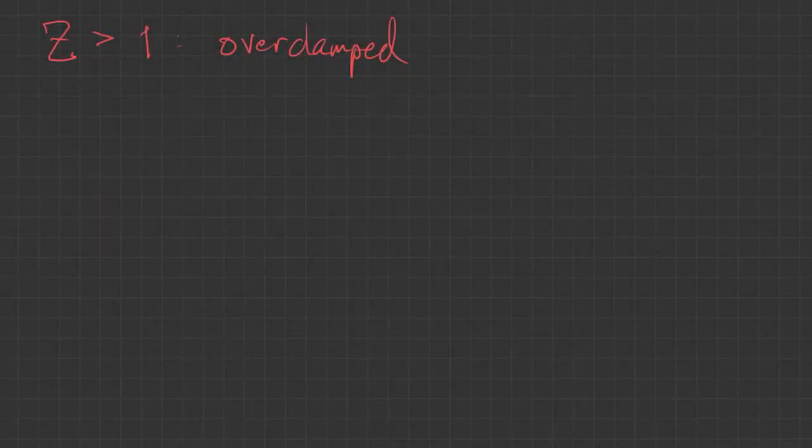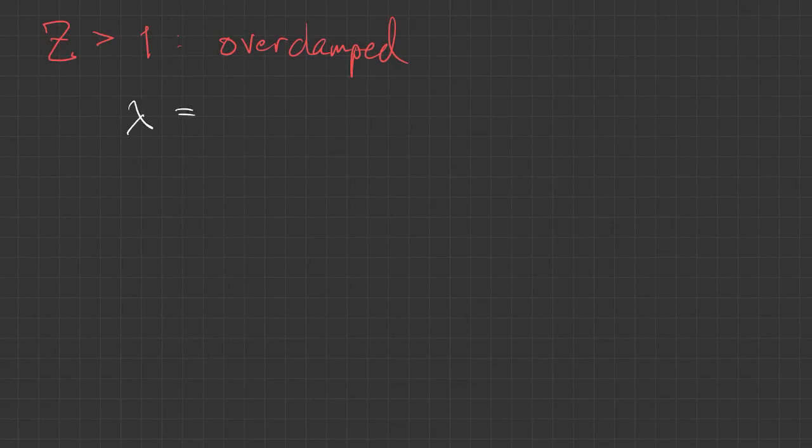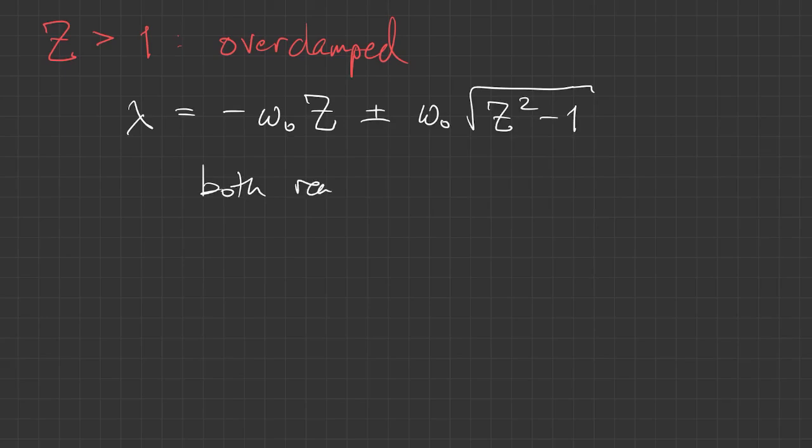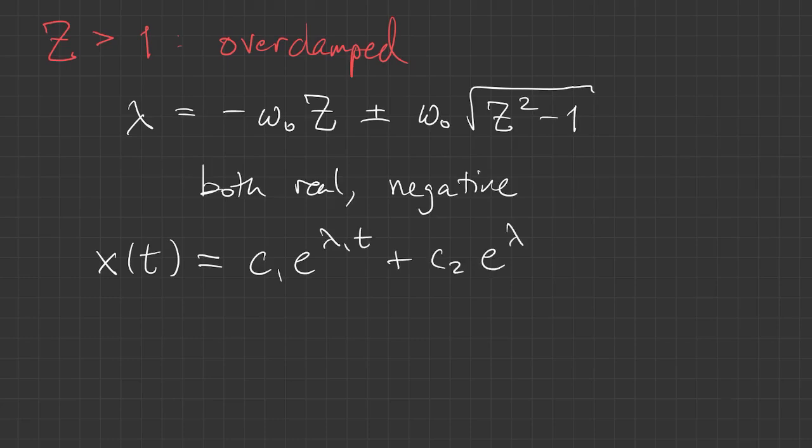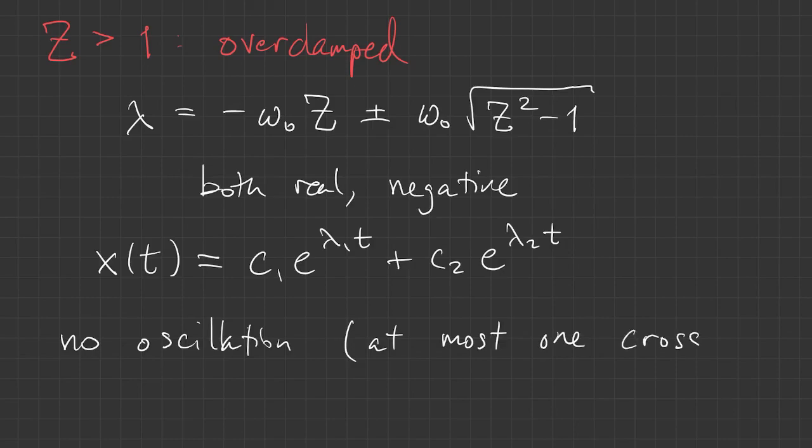Finally, the last case is when the damping coefficient Z is greater than 1, and we call this overdamped. Now we get two distinct real eigenvalues, and they are both negative. As you know, this is the easiest case to solve—you just write down a linear combination of two exponentials. In an overdamped situation, there's no oscillation anymore. You can prove, in fact, that the solution goes through zero at most once. This is probably the situation you want for an airplane wing or a building—so strongly damped that it can't oscillate.